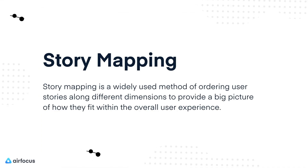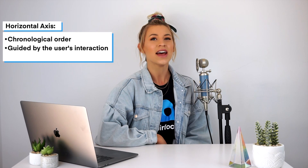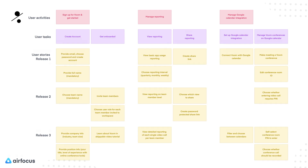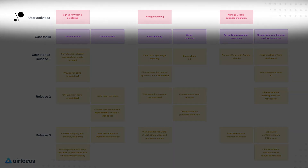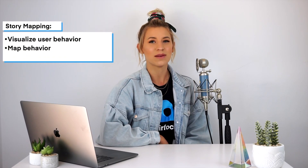Let's start by explaining what story mapping is and what a story map looks like. Story mapping is a widely used method of ordering your user stories along different dimensions to provide a big picture of how they fit within the overall user experience. This map arranges the essential steps of the customer's journey on the horizontal axis in chronological order, guided by how the user would perform tasks in their interaction with the product. The vertical axis describes criticality or necessity, and user stories are arranged vertically top to bottom based on importance. As you can see in this example, our top three main features are at the top of the vertical axis, and their order on the horizontal axis represents the chronological order of when users interact with these features. This allows you to map the flow of their behavior as they progress from their first interaction through to the last step of their objective with your product.